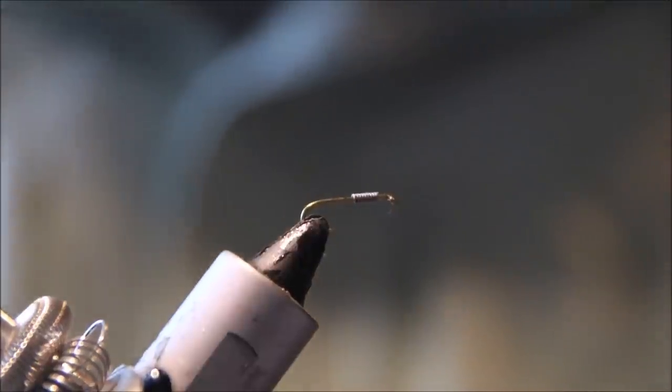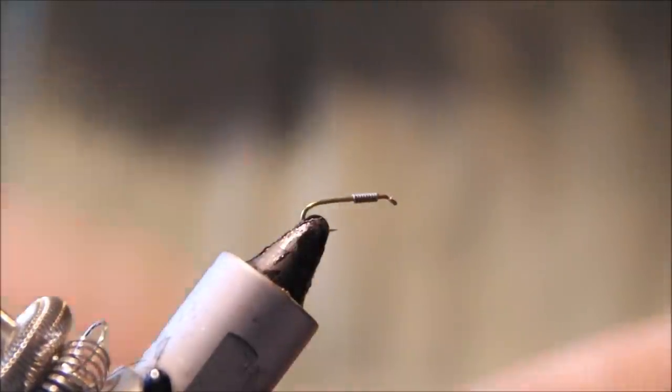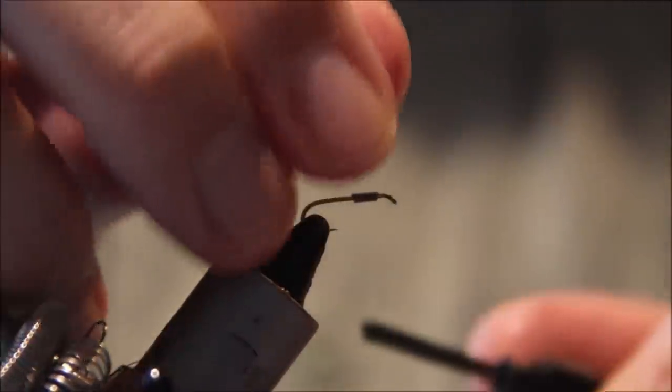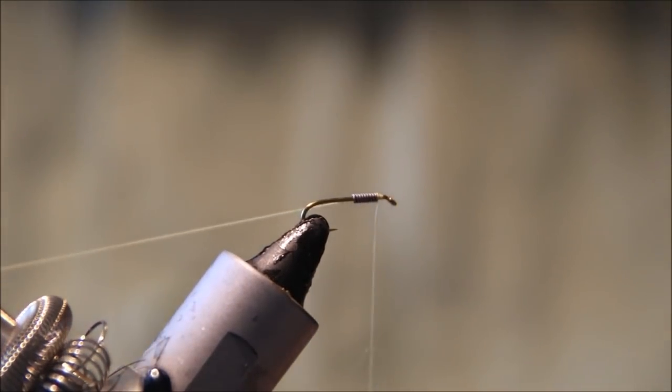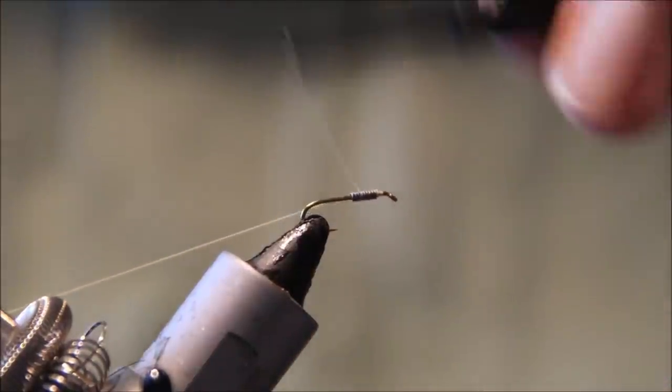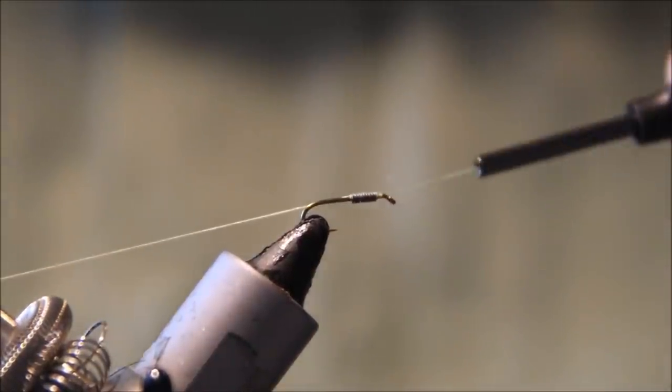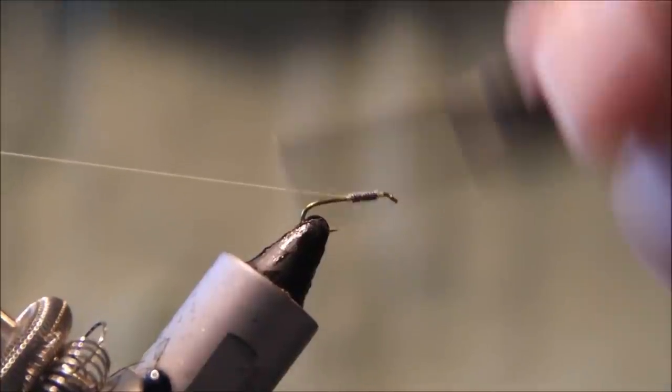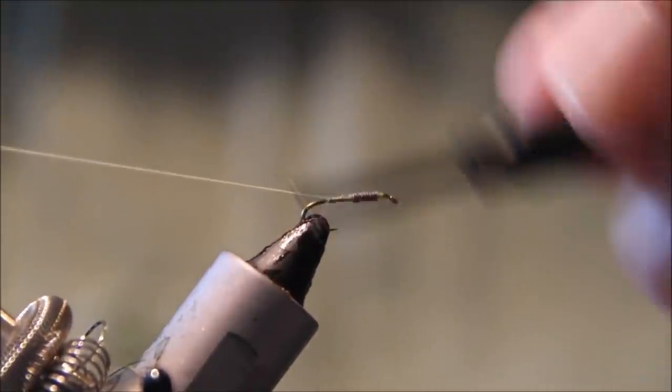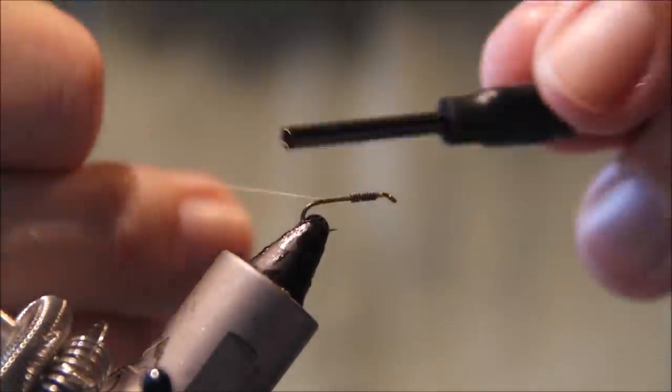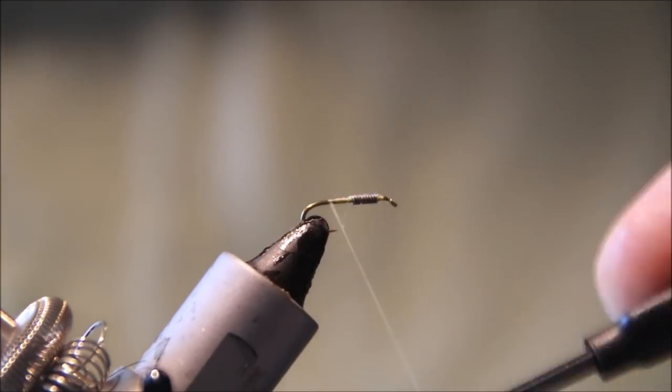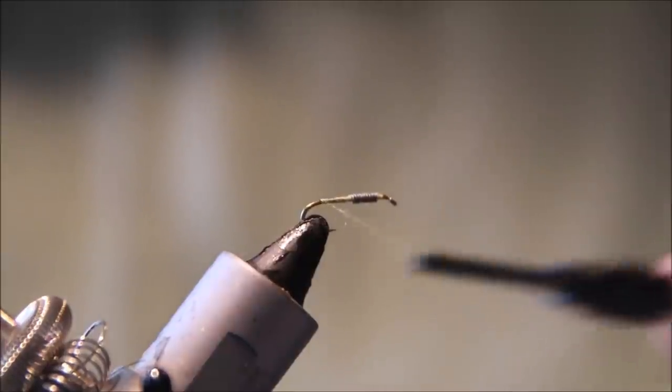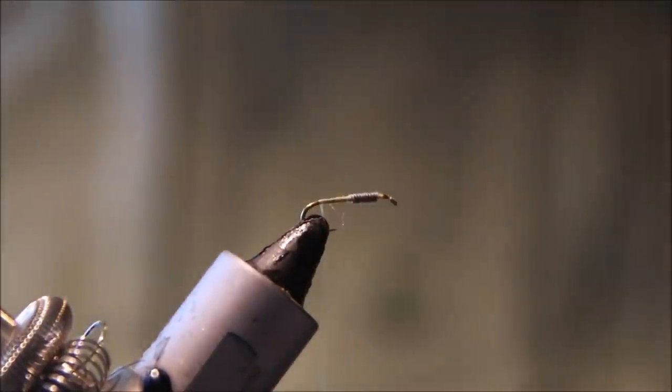I've got a size 16 TMCO 5262 nymph hook in the vise, already weighted with 0.10 lead wire - about 8 turns over the thorax area. I'm using pale colored thread, this is 8-aught Uni, but you can use whatever you like.